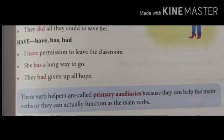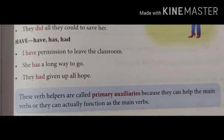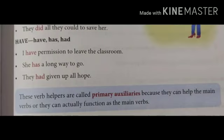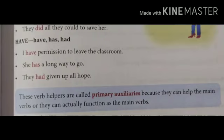Now pay attention and listen carefully. She eats apple. She is eating apple. In these sentences, the highlighted words are verbs. In the first sentence, the verb is eats — it is the main verb as it is independent and expresses meaning on its own. In the second sentence, is eating are the verbs. Is is the helping verb as it helps to understand the meaning of the main verb and makes it clearer.